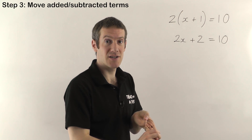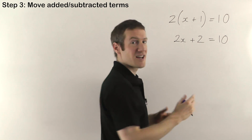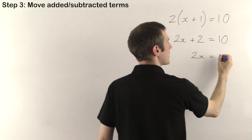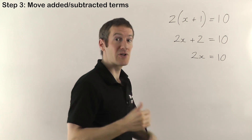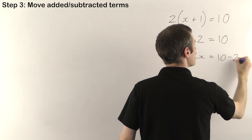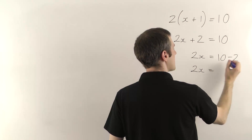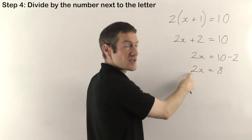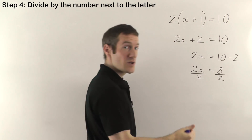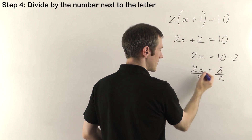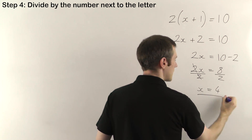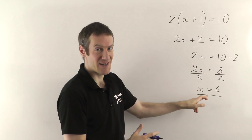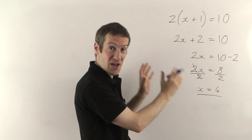Step 3 is move added or subtracted terms — letters to one side, numbers to the other. Leave 2x on the left, keep 10 on the right, and move the plus 2 across. Change sides, change signs: plus 2 becomes minus 2. So 10 minus 2 is 8. Finally, step 4: divide both sides by 2. The 2s cancel, leaving x by itself, and 8 divided by 2 gives 4. That's how you handle brackets, added and subtracted terms, and dividing by the number next to the letter.